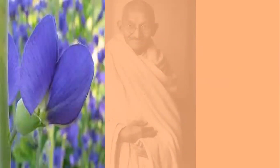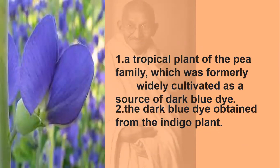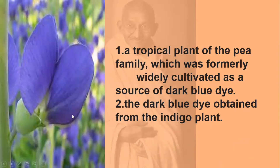Indigo is not only a plant but also a color. It is a tropical plant of the pea family which was formerly widely cultivated as a source of dark blue dye. The dark blue dye is obtained from the indigo plant. So indigo is a name of a plant as well as a name of the color.